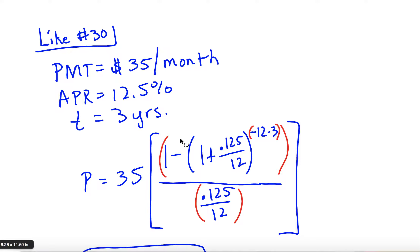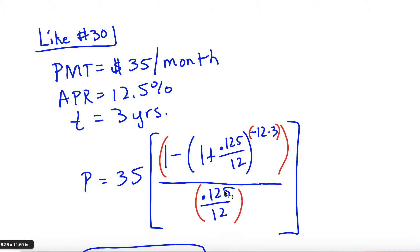$35 a month goes in for payment. Then you put in all the numbers: 1 minus (1 plus 0.125 divided by 12) raised to the power of negative 12 times 3. The 12 comes from the fact that you're paying per month and there are 12 months in a year. To minimize rounding error, put in parentheses carefully. Start with the 35, then the big parentheses around the numerator, then 1 minus (1 plus 0.125 divided by 12) raised to negative 36, divided by the denominator (0.125 divided by 12).